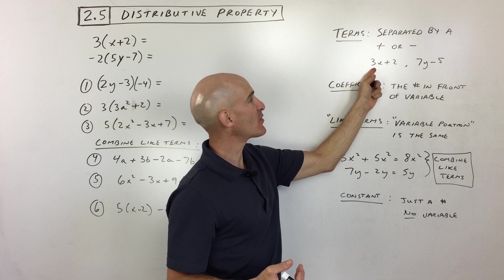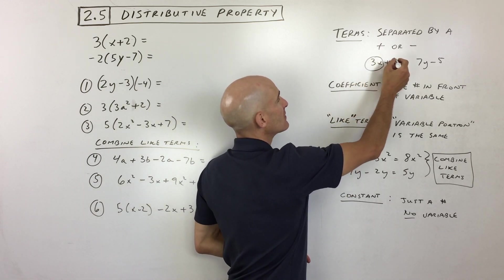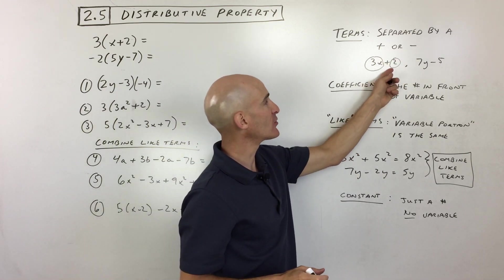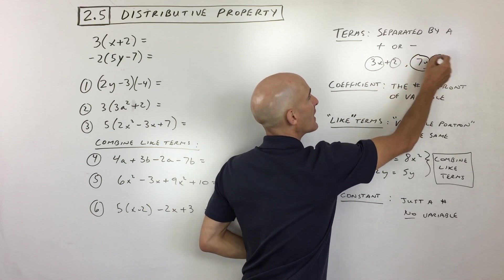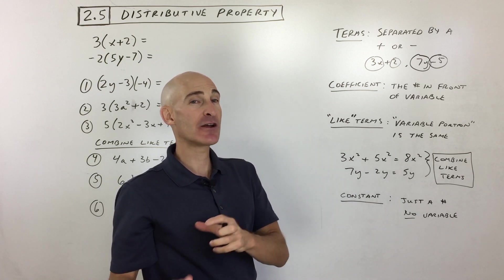Speaking of terms, what exactly are terms? Well, terms are the quantities that are separated by a plus sign or a minus sign. So for example, if you have an expression like this, 3x plus 2, the terms would be 3x and positive 2. This one over here, the two terms would be like 7y and negative 5. So the terms are basically like groups. They're separated by a plus sign or a minus sign.